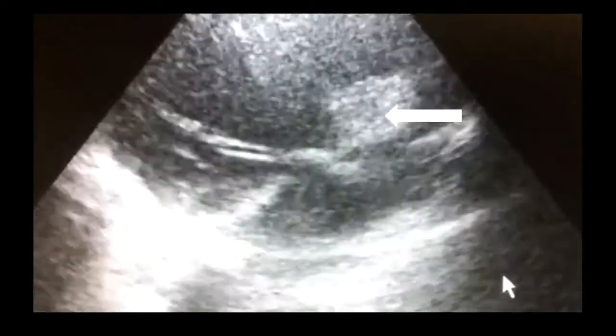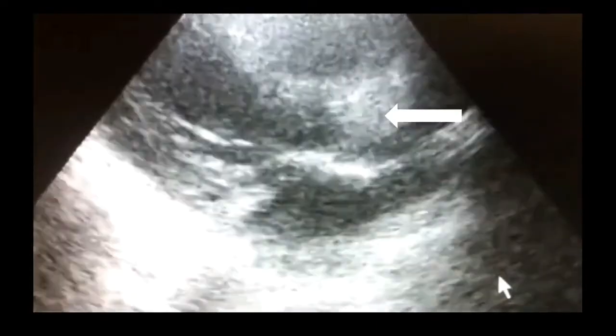This is another example of aortic dissection, in which the blood between the intima and the media, the blood under the intima flap, is thrombosed, and that's why it looks white, bright, and echogenic in this case.